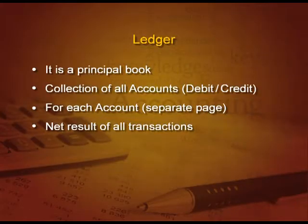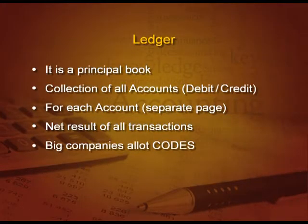Suppose we have got 10 transactions for Ram. All these transactions, whether debit or credit, will give the net result of Ram account on one page. Now, big companies allot codes instead of particular page numbers — they allot codes.